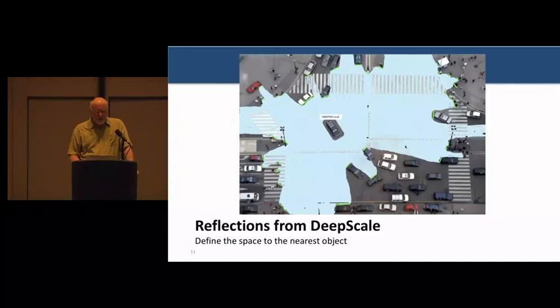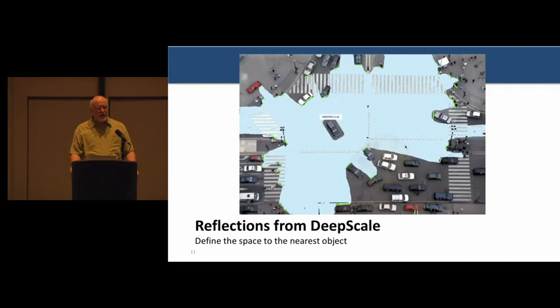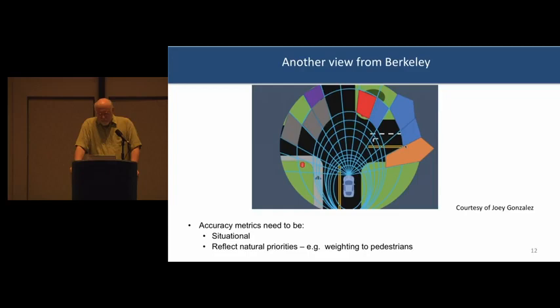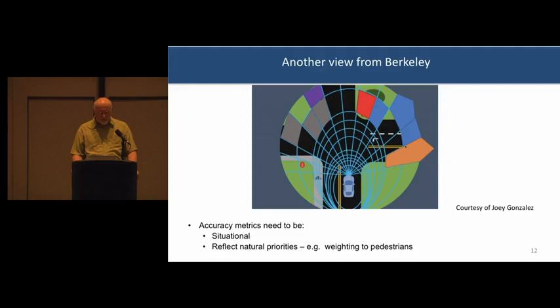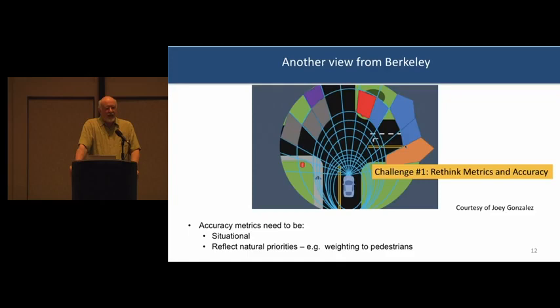My colleagues at DeepScale are looking at how far away your nearest obstacle is and having some sense of your entire understanding of your environment — what is the drivable space around you. My colleague at Berkeley, Professor Joey Gonzalez, is looking at this from the perspective of the ego car, weighting things that are closer rather than farther away. We also want to reflect natural priorities: a garbage can is a lot less important than a pedestrian. Our very first challenge is rethinking the metrics we're using for accuracy.